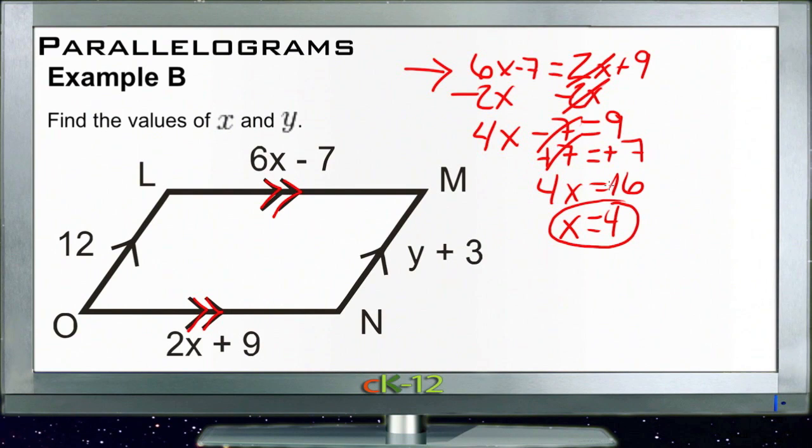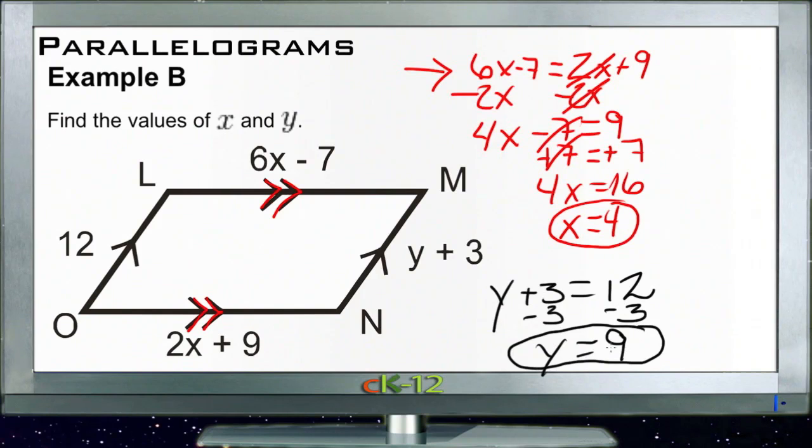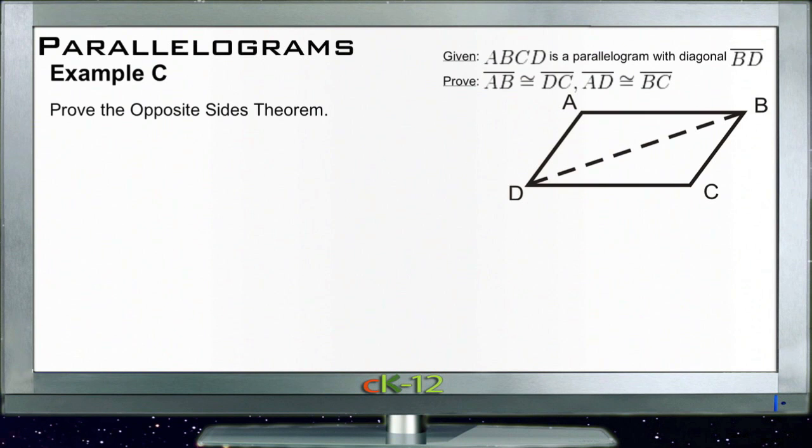So there's one of our values. And then our other value is actually easier, because all we have to do for that one is set Y plus 3 equal to 12, and then subtract 3 from both sides. And we get Y equals 12 minus 3, which is 9. So X is 4, Y is 9. And finally, let's take a look at example C.